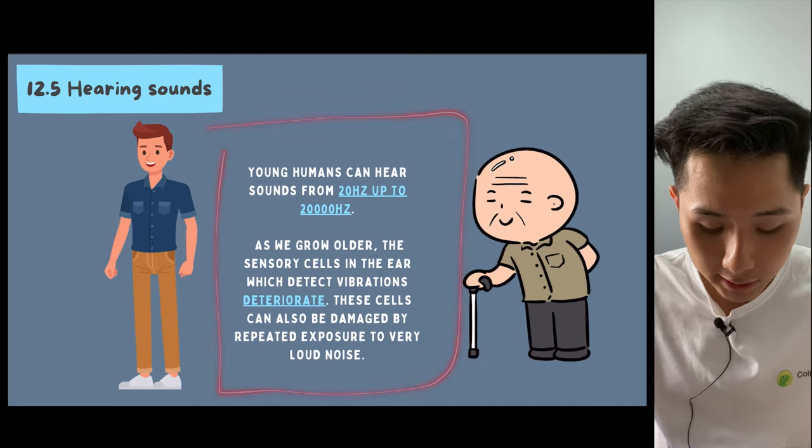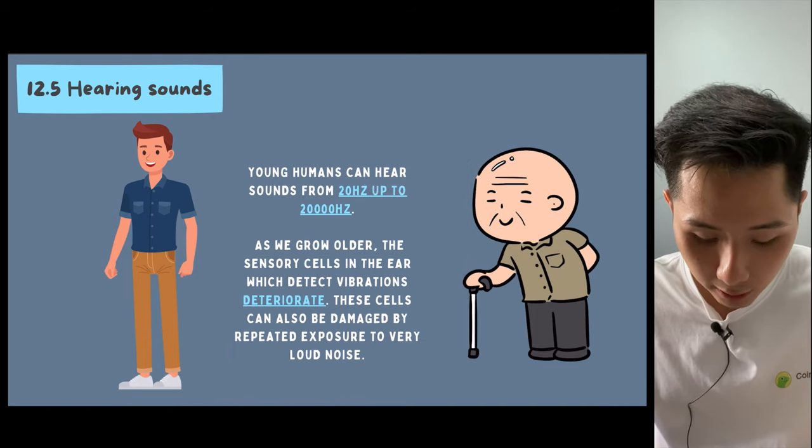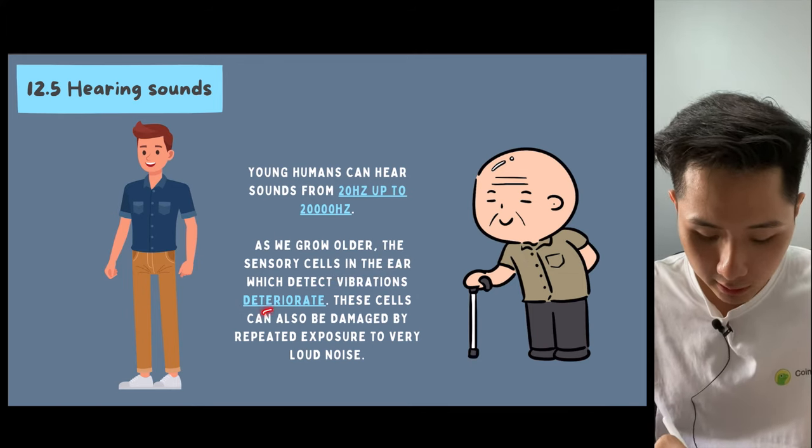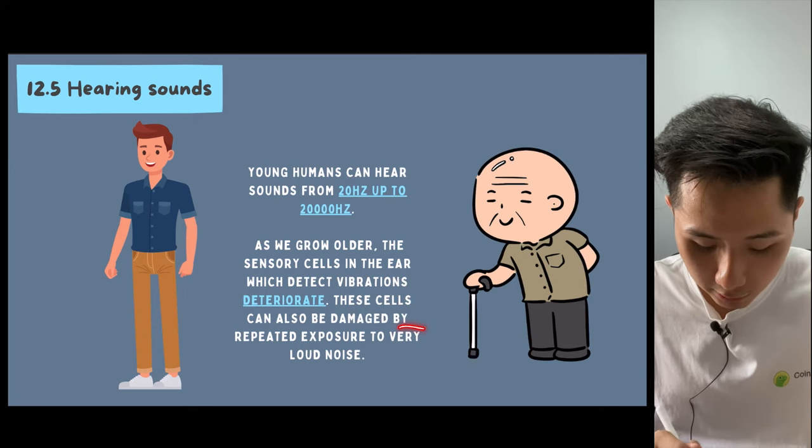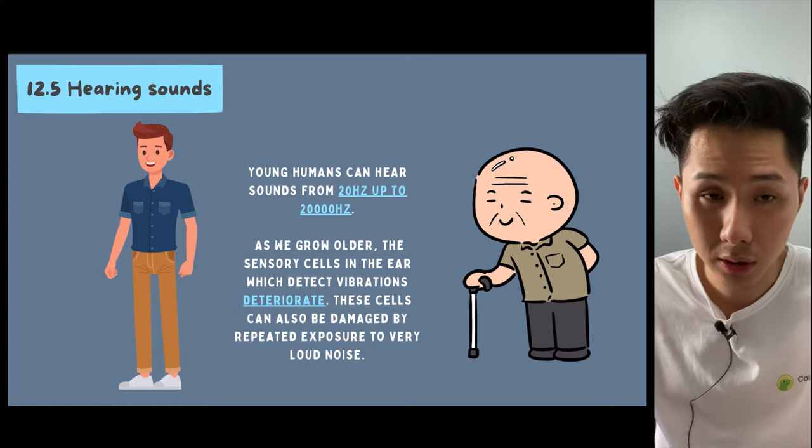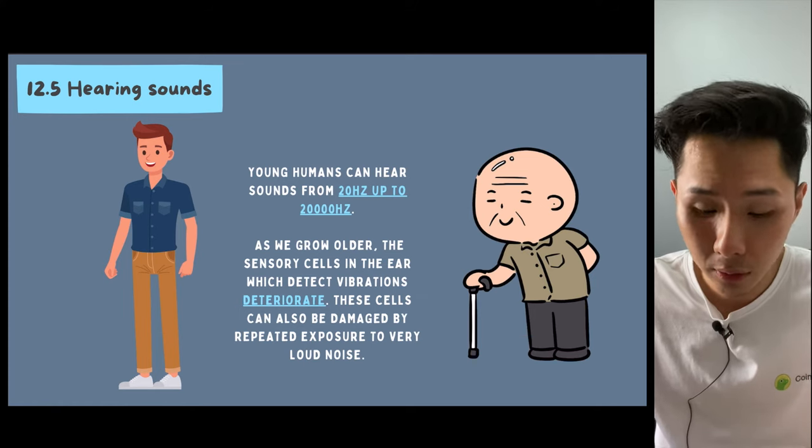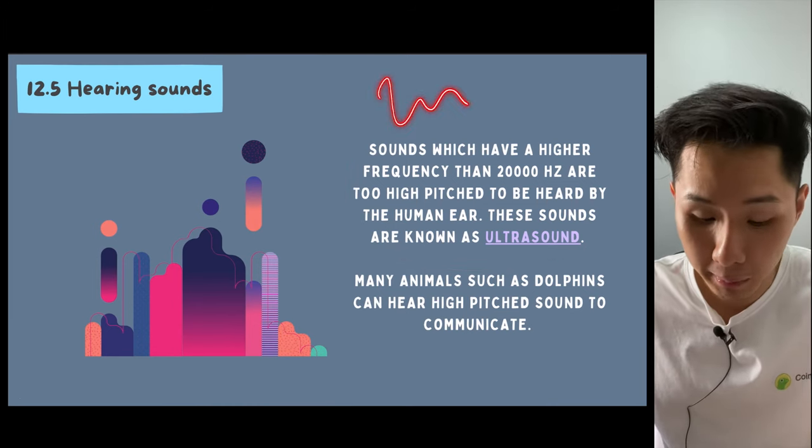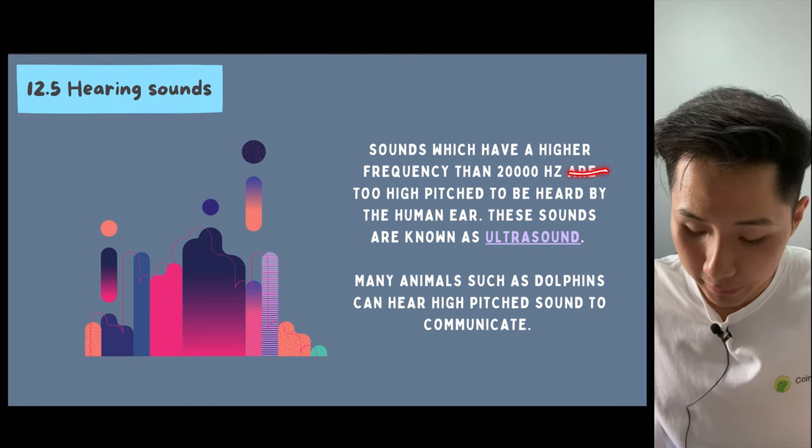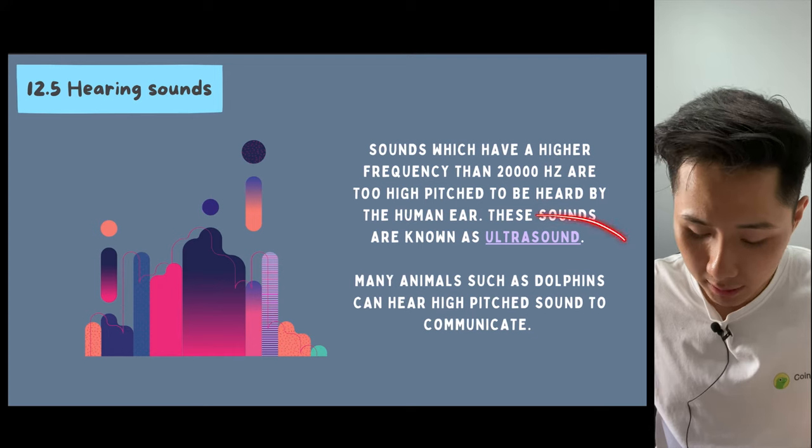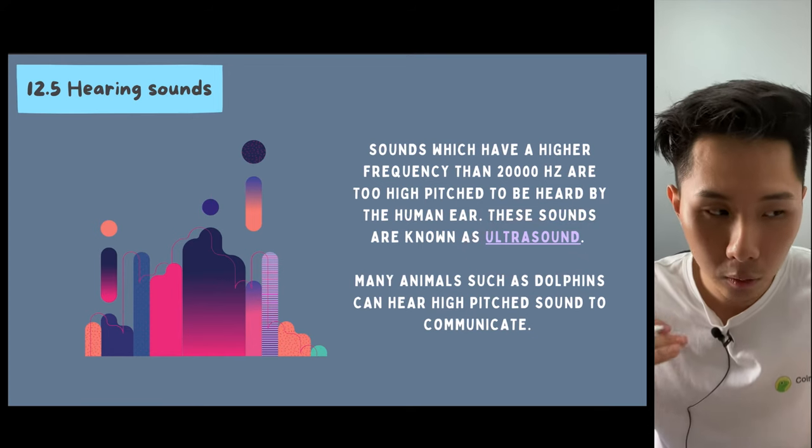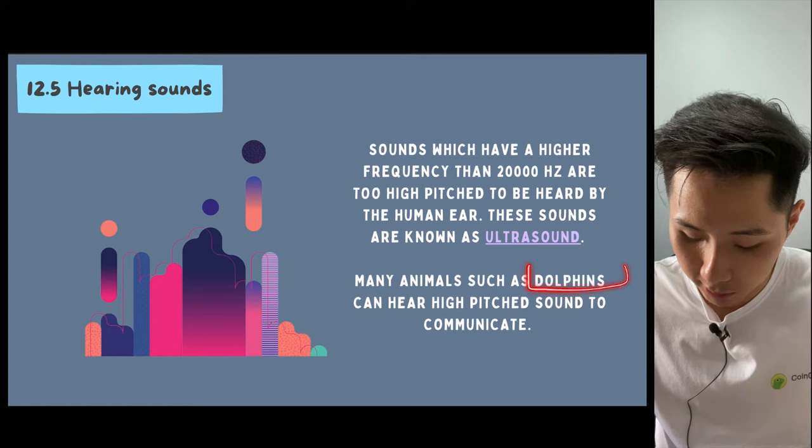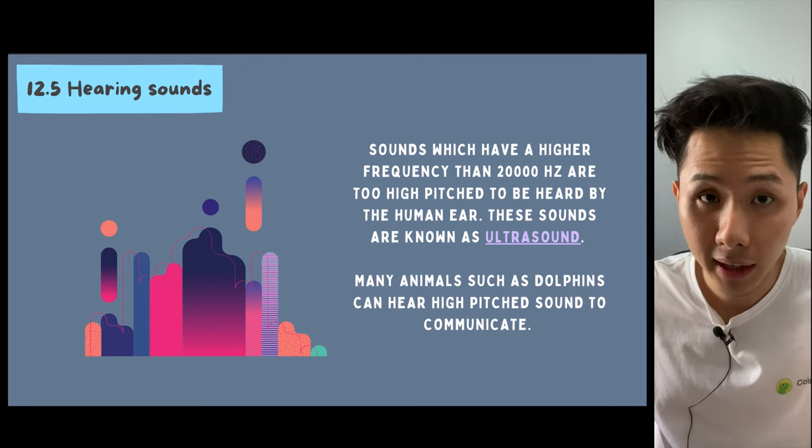Now let's talk about hearing sound. Young humans can hear sound from 20 hertz to 20,000 hertz. As we grow older, the sensory cells in the ear will deteriorate. These cells can also be damaged by repeated exposure to very loud music. If you have your earphones on with very high volume, you might damage your eardrum. What if the sound is more than 20,000 hertz? These sounds will be too high-pitched to be heard, and we call sound that has greater than 20,000 hertz frequency ultrasound. They can be heard by some animals like dolphins, which use this high-pitched sound to communicate.